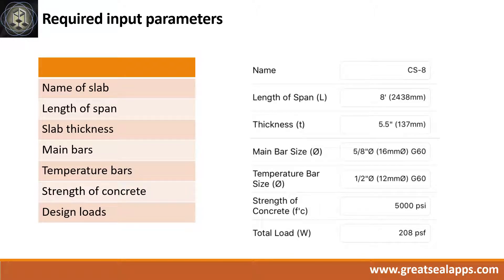Enumerate input parameters required. Name of slab: CS8. Length of span: 8 feet. Slab thickness: 5.5 inches. Main bars: 5/8-inch diameter bar at grade 60. Temperature bars: 1/2-inch diameter bar at grade 60. Strength of concrete: 5,000 PSI. Total load: 208 PSF.